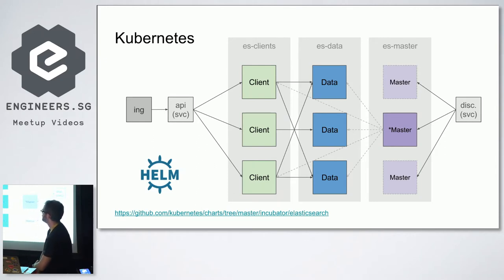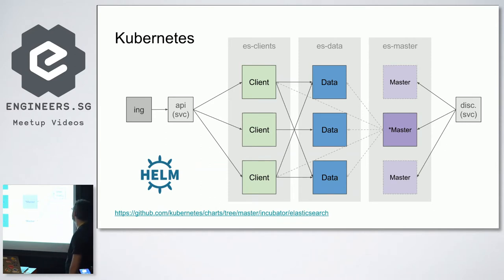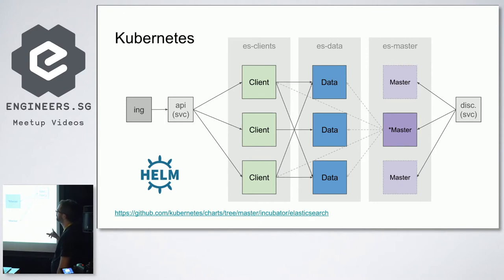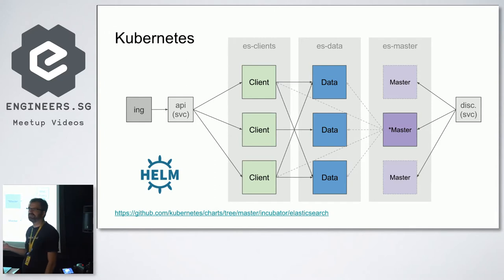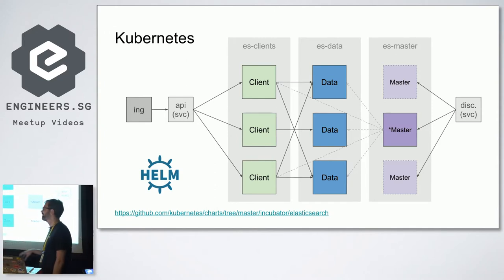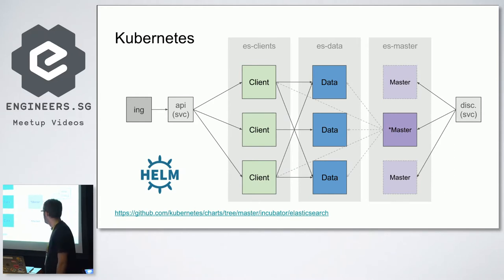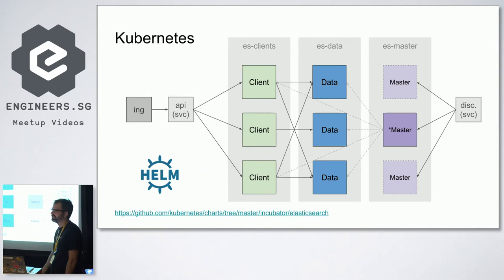If you want to deploy Elasticsearch into Kubernetes, you'll have these three types of nodes, each with a deployment. You need a couple of services — in the simplest configuration, two: one ClusterIP service for master discovery, and your API service exposed outside the cluster either as a NodePort or, in our setup, as an ingress. We're using Helm to deploy it. There is a Helm chart in the Kubernetes charts repository you can adopt for your own setup.